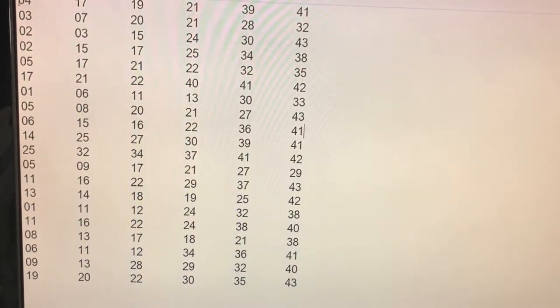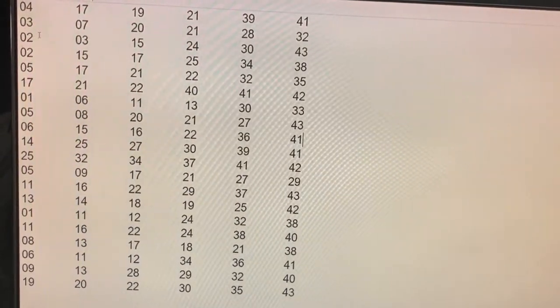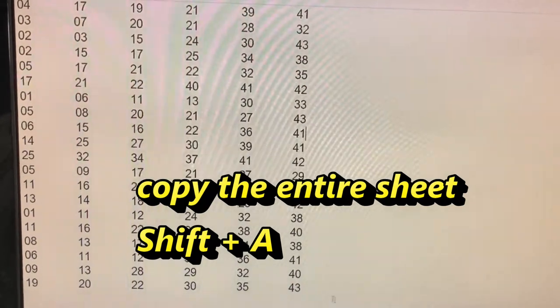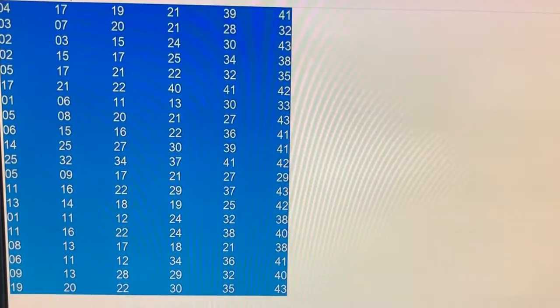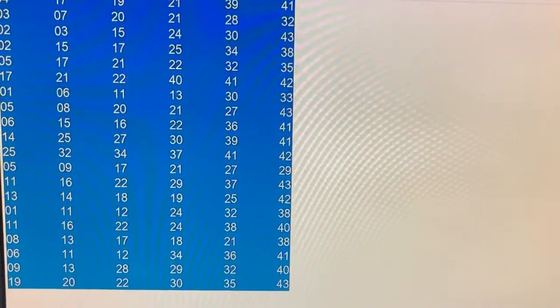For single digits, you need to write zero like this: 04, 03, 02. Then you're going to select and copy the data.